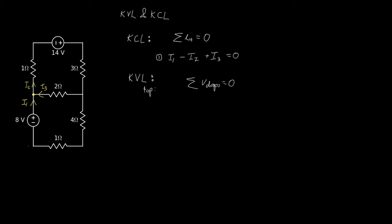So we have a voltage drop of one times I2 minus 14 plus three I2 and finally two times I3. That sums up to zero.